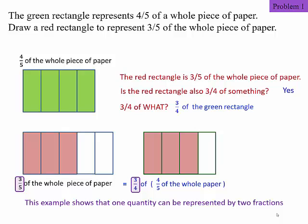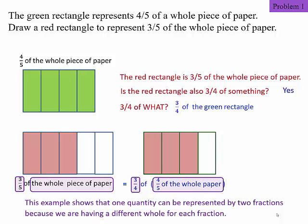can be represented by two fractions. On one hand, you can see it as three-fifths. On the other hand, you can see it as three-quarters. Why? Because each fraction is actually referring to a different reference whole. The three-fifths is actually referring to the whole piece of paper. Whereas the three-quarters is only referring to a fraction of the whole piece of paper.